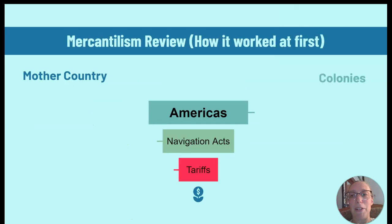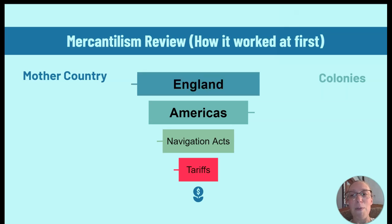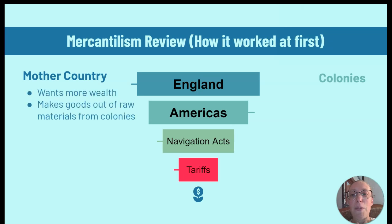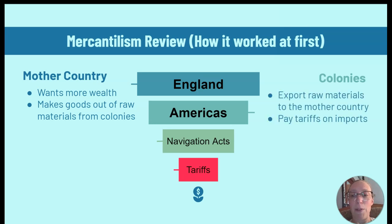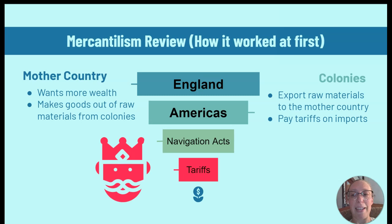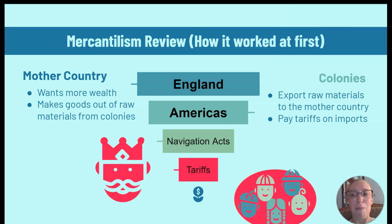This last part of the unit can be a little dry if you don't understand the big picture. We already talked about mercantilism, and that becomes important for understanding rights because different people have different expectations for the colonies. Remember, the mother country, England, wanted more wealth and to make goods out of the raw materials from the colonies, while the colonies exported raw materials to the mother country and paid tariffs or taxes on imports.